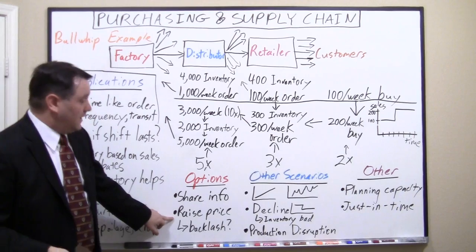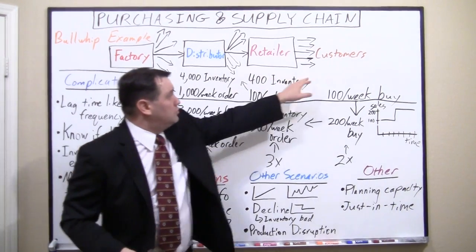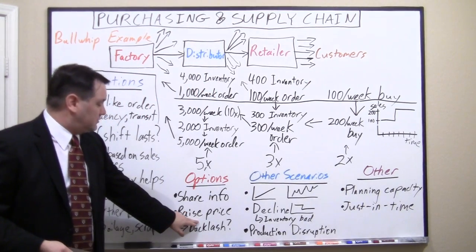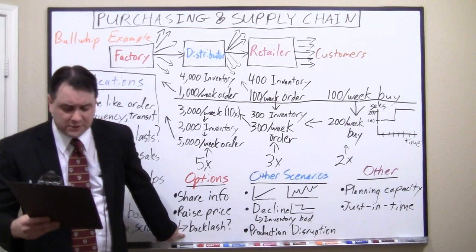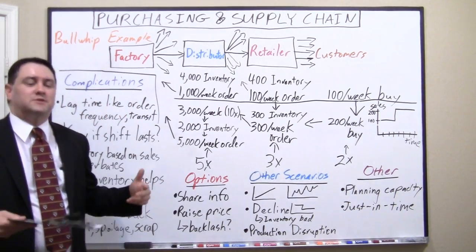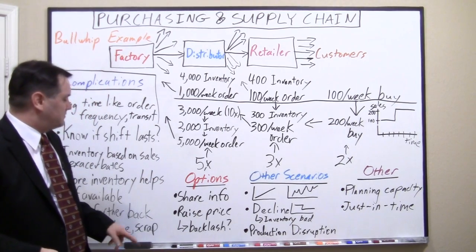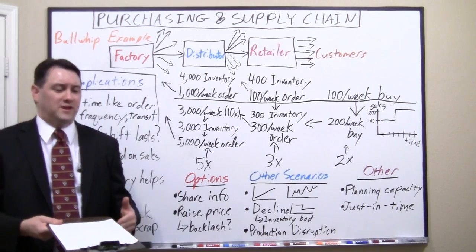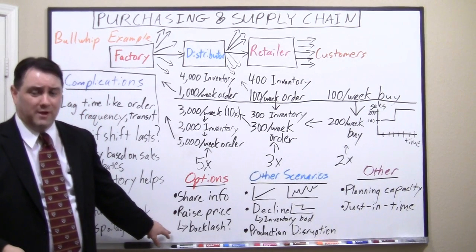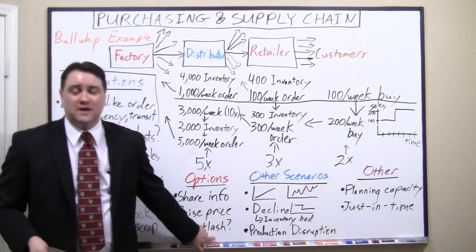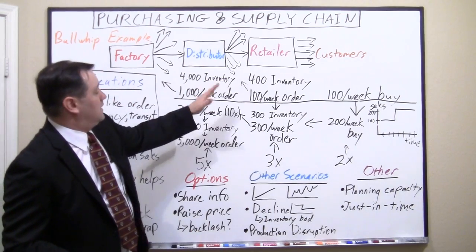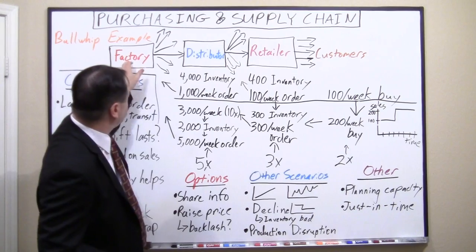Another option is raising price, which will cool demand. If you can't get the supply, you can make more money by restricting demand through higher prices. The problem is backlash. In the auto industry, dealers would want to raise prices, but that could turn off other customers. There was a difference of opinion between the dealer and manufacturer: the dealer gets all the money from the raised price, but the manufacturer still wholesales at the same price while suffering the brand backlash. That created real tension between dealers and manufacturers.